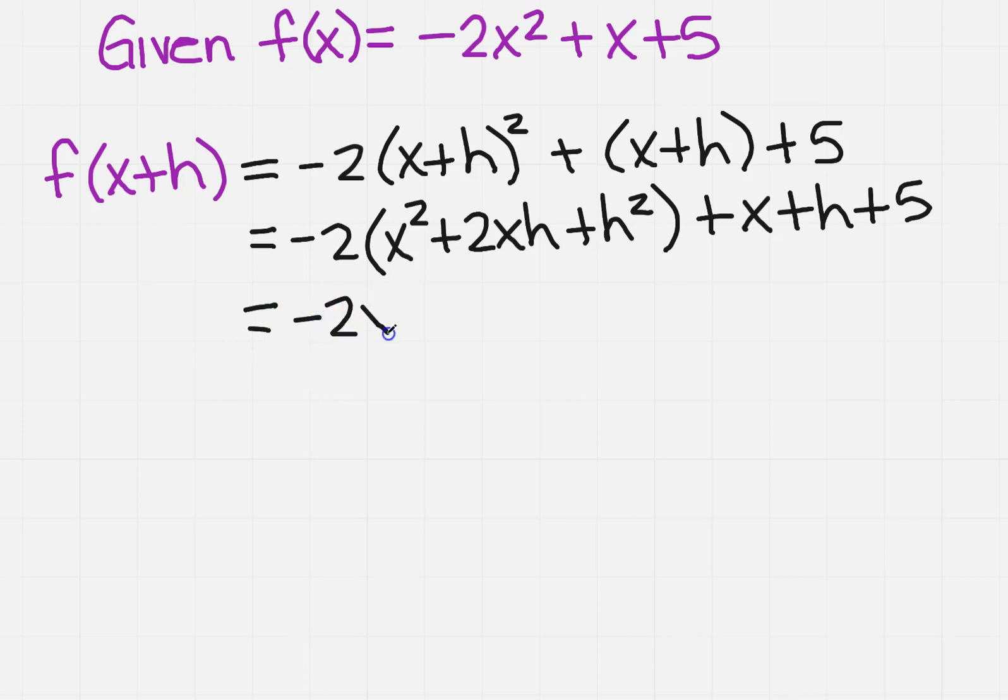Minus 2, so I'm going to get minus 2x squared minus 4xh minus 2h squared plus x plus h plus 5.